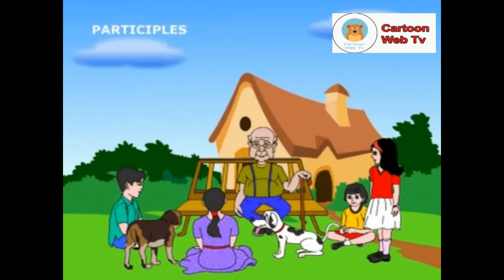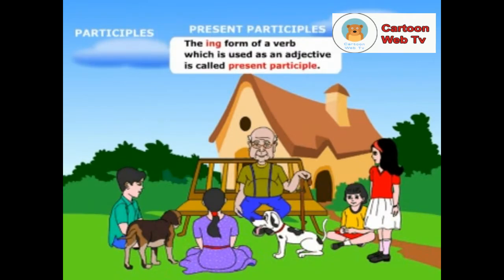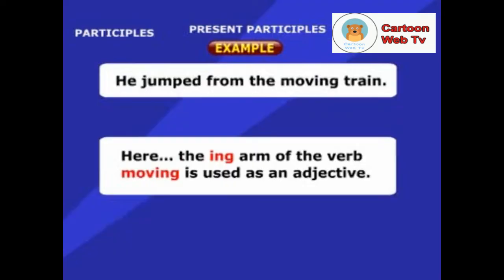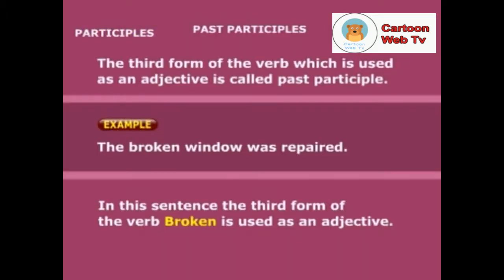Grandpa, I will tell about present participles and past participles. Carry on, my boy. The ing form of a verb which is used as an adjective is called a present participle. Example: he jumped from the moving train. Here, the ing form of the verb 'moving' is used as an adjective. The third form of the verb which is used as an adjective is called past participle. Example: the broken window was repaired. In this sentence, the third form of the verb, 'broken', is used as an adjective.